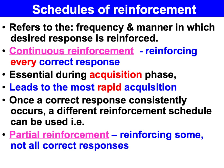Continuous reinforcement refers to the reinforcement of every correct or desirable response. And according to Skinner, based on his experiments with rats and pigeons, continuous reinforcement is essential during the acquisition phase so that the learner makes the link between the operant response — their behaviour — and the consequence, the reinforcer.